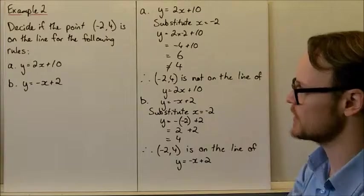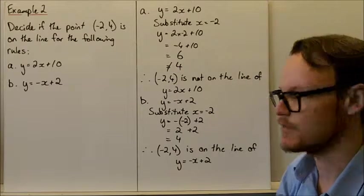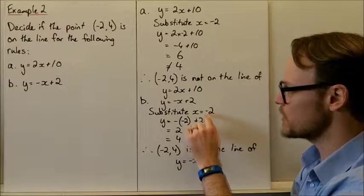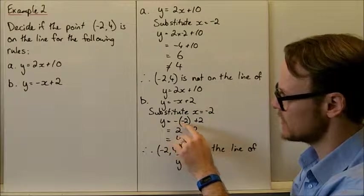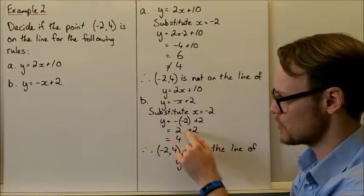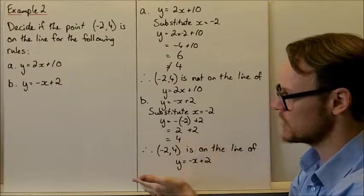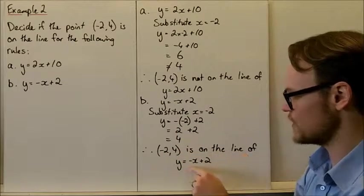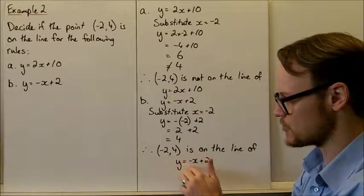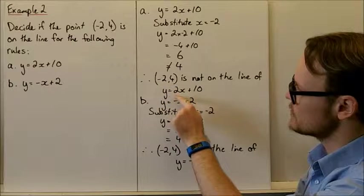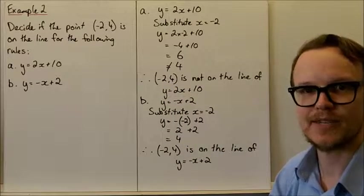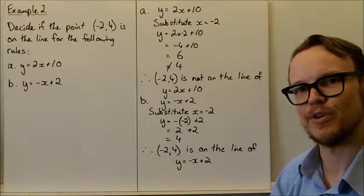We try the same with y equals negative x plus 2. Substitute x equals negative 2. The negative of negative 2 is 2. We get 2 plus 2, which is 4. So (-2, 4) is on this line because it fits the rule. Because it doesn't fit the first rule, that point would not be on that line.